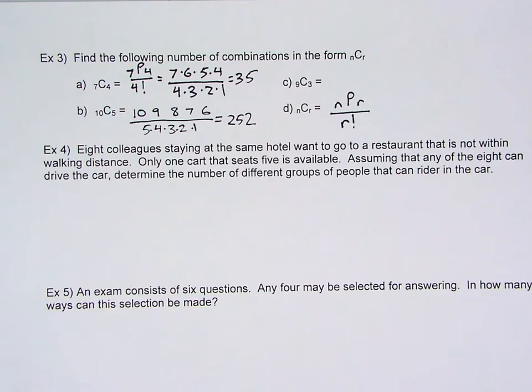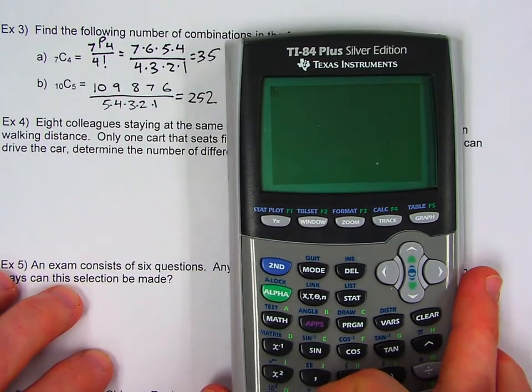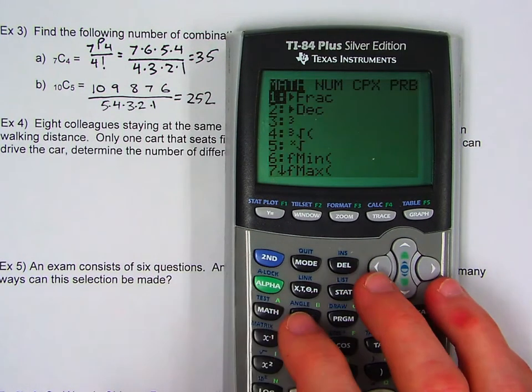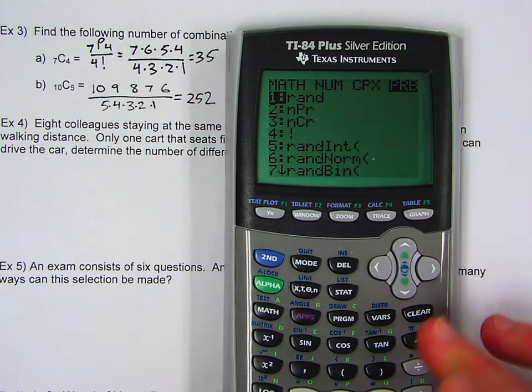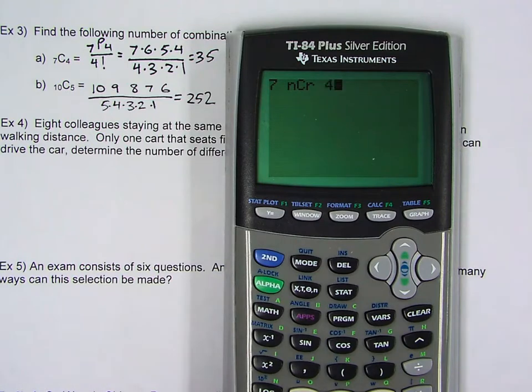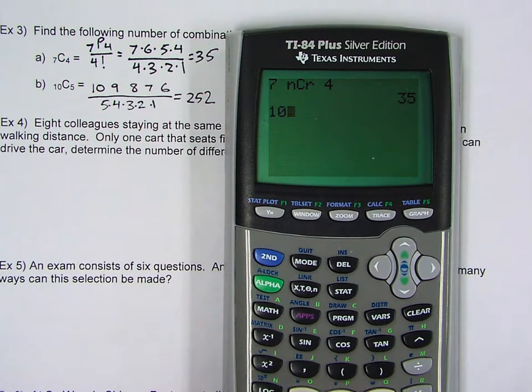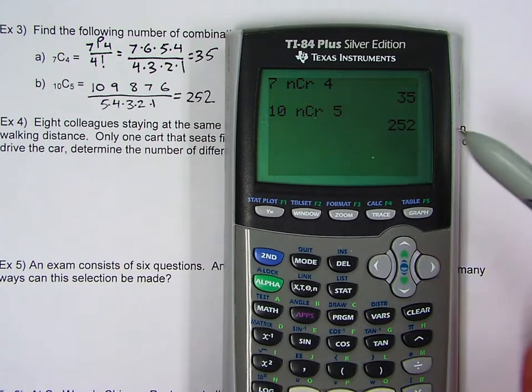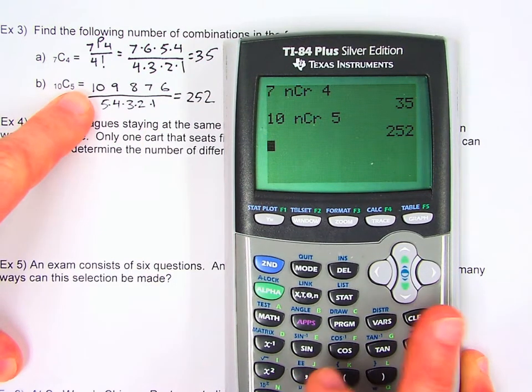Now, fortunately for us, we can also do this on the calculator. So let me show you how to do A and B on your calculator. And then we'll try C there. So we want to do 7C4. And it's going to be in that PRB menu, same as before. So we're going to type in 7, math, scroll over to probability. And now you're looking for nCr. So that's number three there. So 7C4. And sure enough, we get our 35. Let's try 10C5. So 10, math, PRB, nCr, 5. And we get 252. So again, you can use your calculator to find these, but it's also good to know exactly how you're doing these.